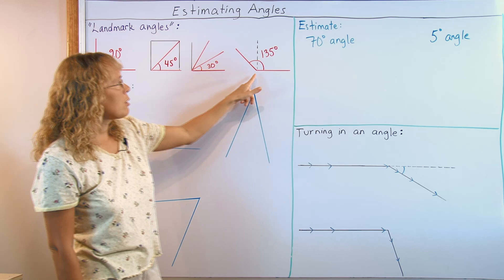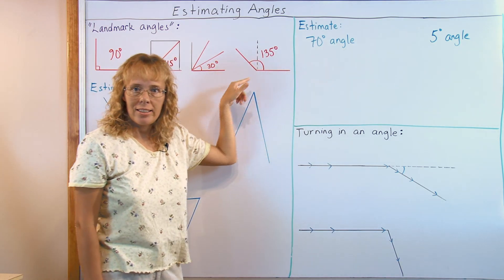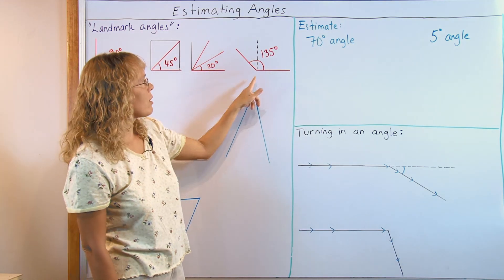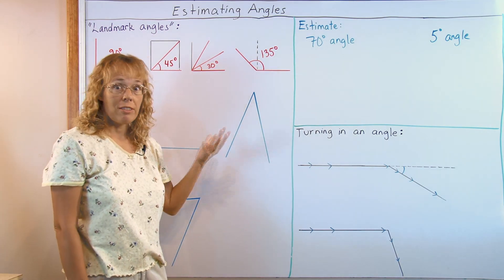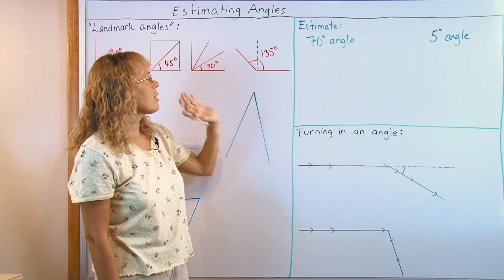Now this one is made by adding 90 and 45 degree angles together. So we get an obtuse angle of 135. You just use that as one more reference angle when estimating angles.